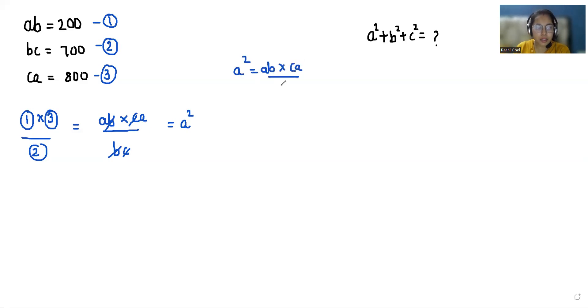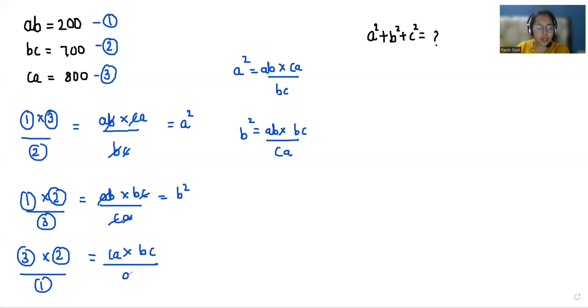Similarly the value of b² we can find when I multiply equation one with equation two and divide by equation three. So equation one is ab times equation two is bc divided by equation three is ca. If I eliminate c and a, what is left is b². So b² is ab times bc divided by ca. c² is when I multiply equation three with equation second and divide by equation one. So third is ca times bc divided by ab.